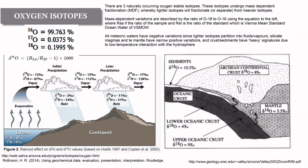So, oxygen isotopes. There are three naturally occurring oxygen stable isotopes - I've given their percent abundance to the left. Oxygen-16 is largely dominant, then we have oxygen-17 and oxygen-18, and these isotopes undergo mass-dependent fractionation whereby the lighter isotopes will separate from the heavier isotopes. The mass-dependent variations are quantified by the ratio of oxygen-18 to oxygen-16, using the delta notation equation listed here.